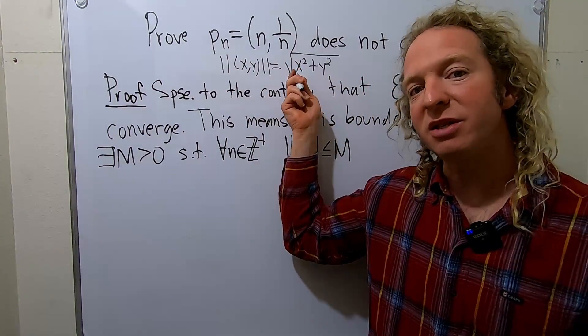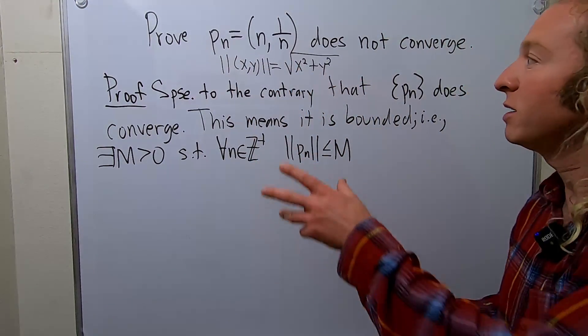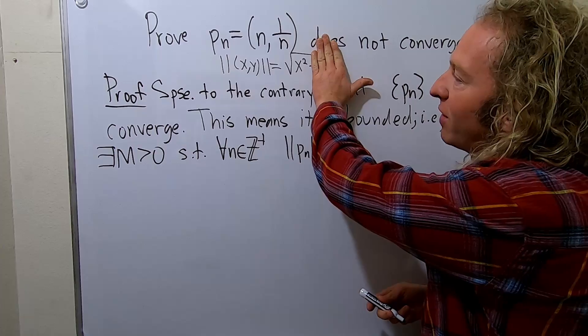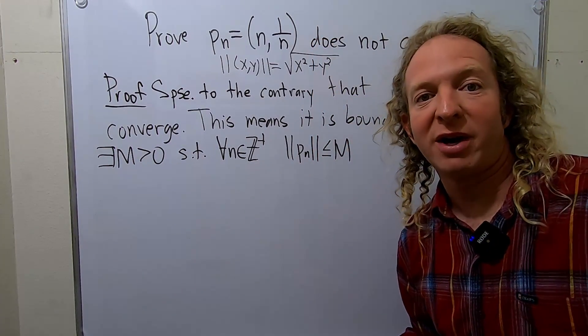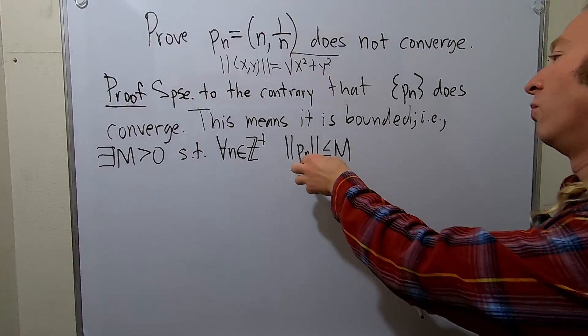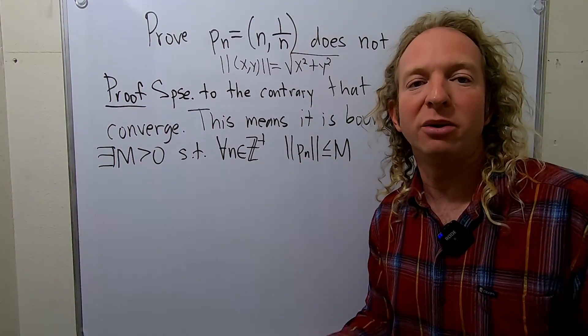This extends to three dimensions. It extends to n dimensions. In one dimension, it's simply reduced to the absolute value. You get the square root of x squared, which is just the absolute value of x. So it's called the Euclidean distance, or when you're in higher dimensions, they call it the Euclidean norm.